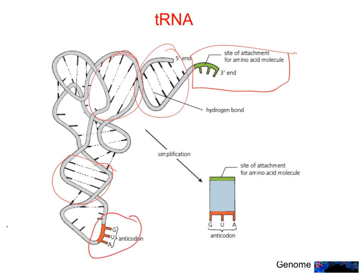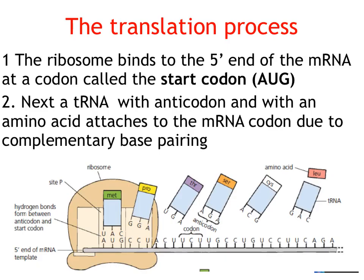What we've done here is to use a simplified representation of the whole tRNA molecule, just to simplify what the tRNA molecule looks like as we move on to look at the process of translation. So here's our messenger RNA transcript, and what happens is it travels to the ribosome. It binds to the ribosome at an area with a codon called a start codon.